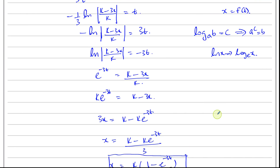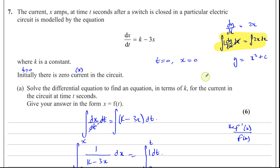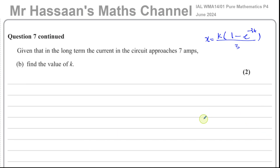We haven't found the value of k — we don't have enough information yet. That's part A finished. Now for part B: given that in the long term the current in the circuit approaches 7 amps, find the value of k.